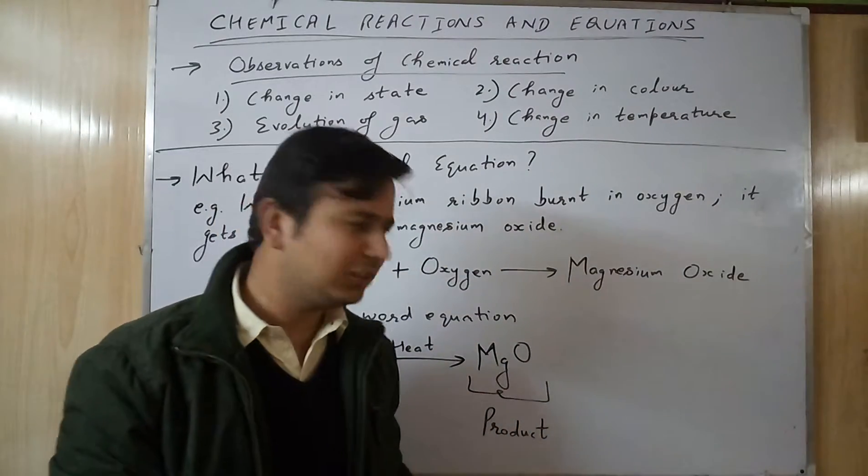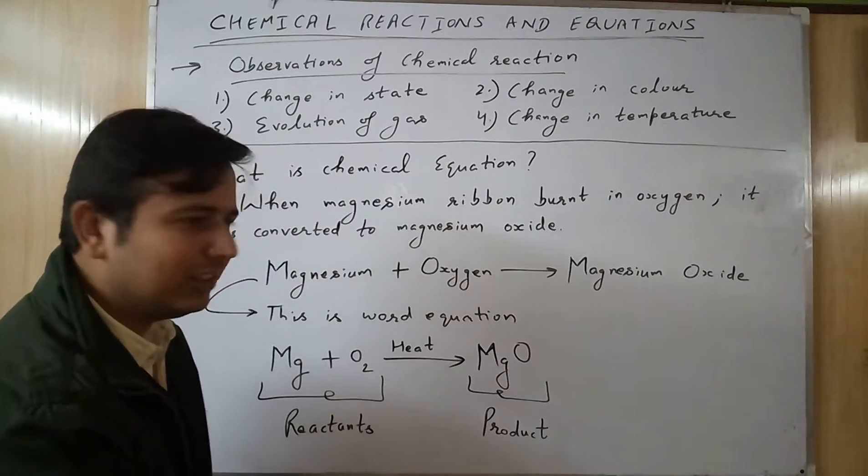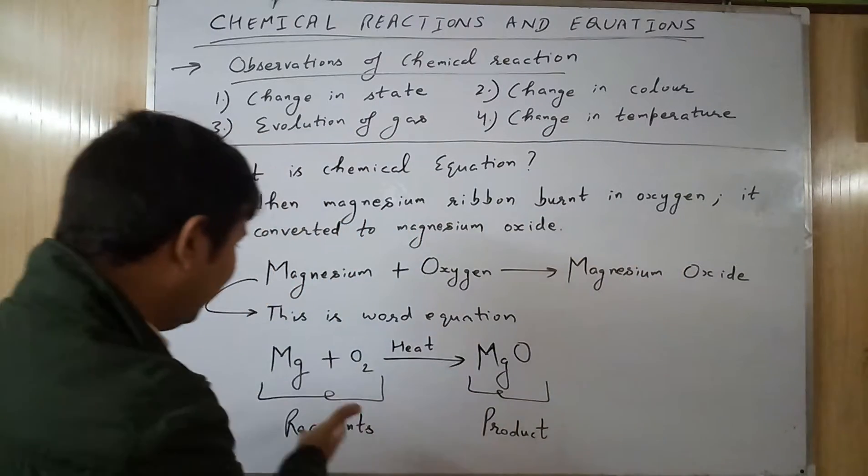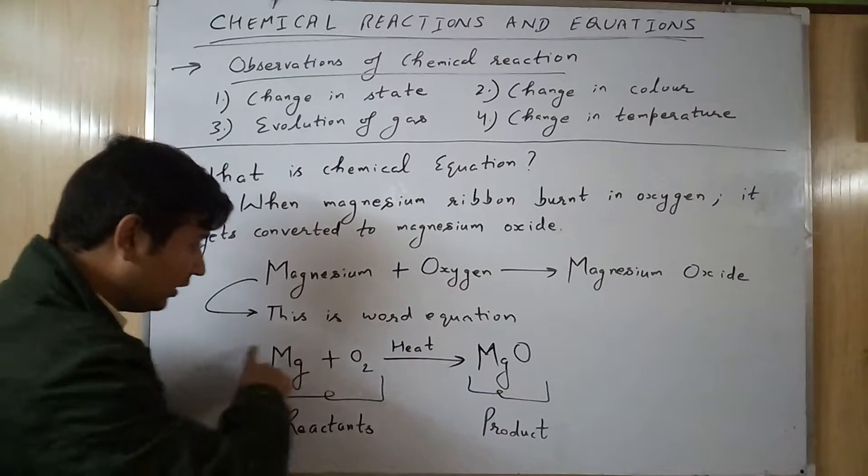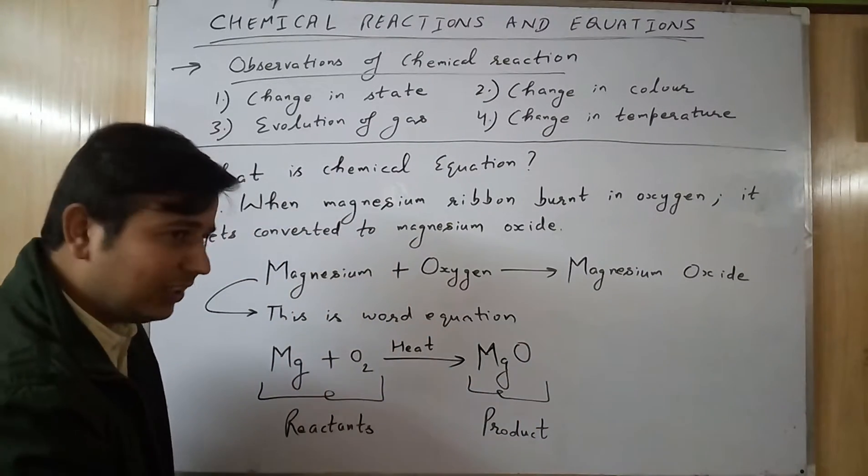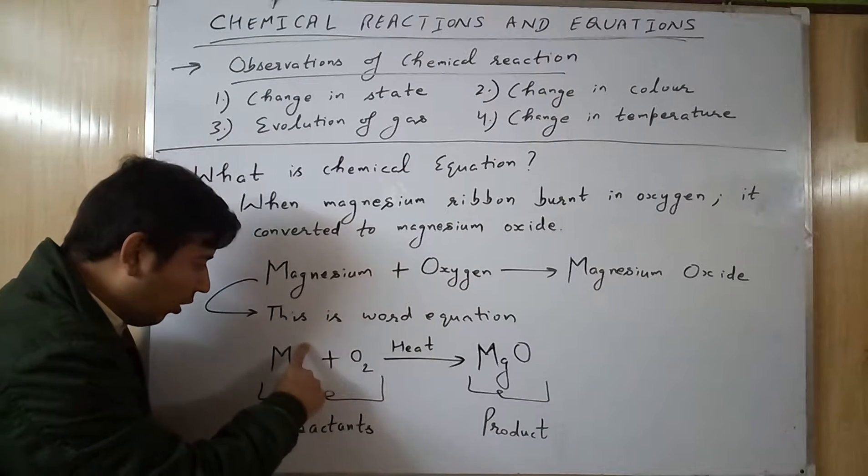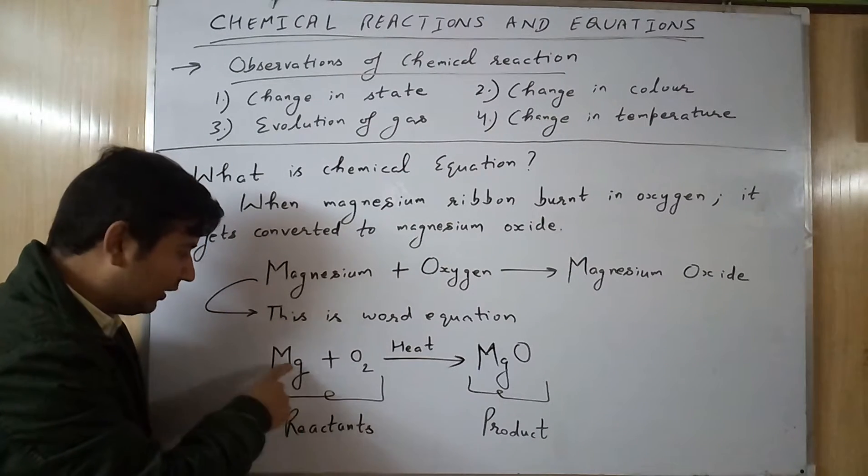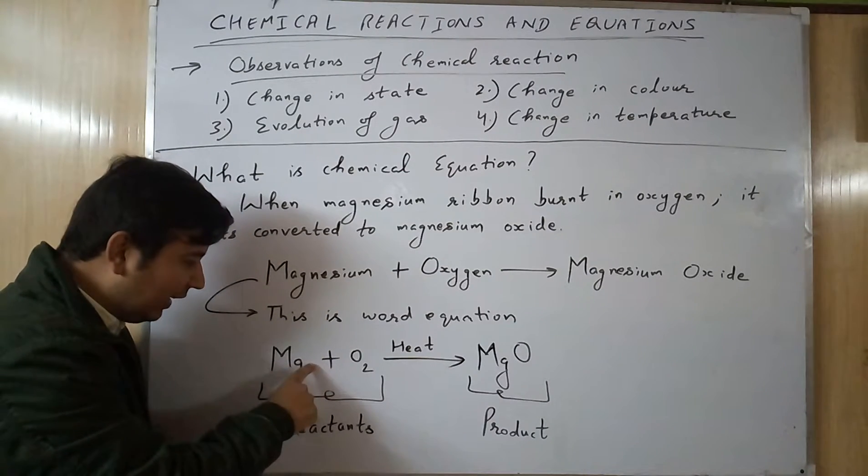I think it is much clearer to you because it is already clear from your previous classes. So these are reactants, these are products, and this is a chemical equation. One missing thing here which I will discuss further - we can also write down the state. For example, if this is solid you can write S in brackets.